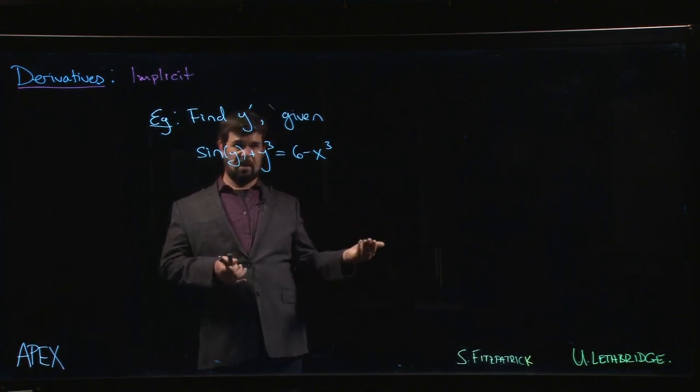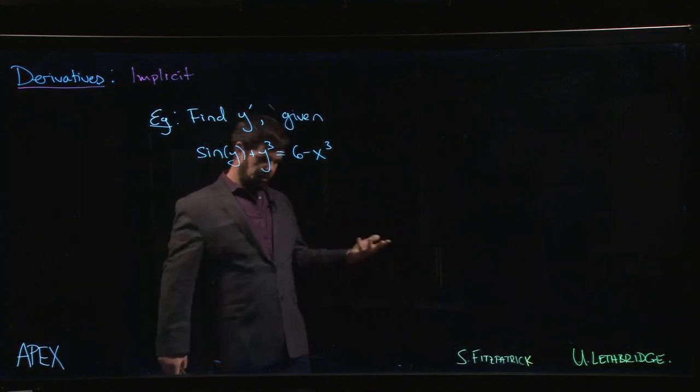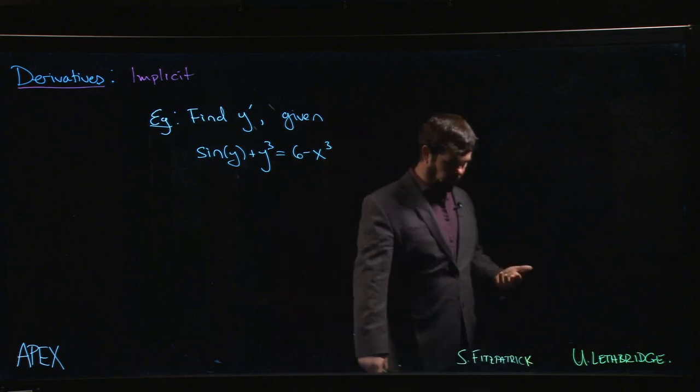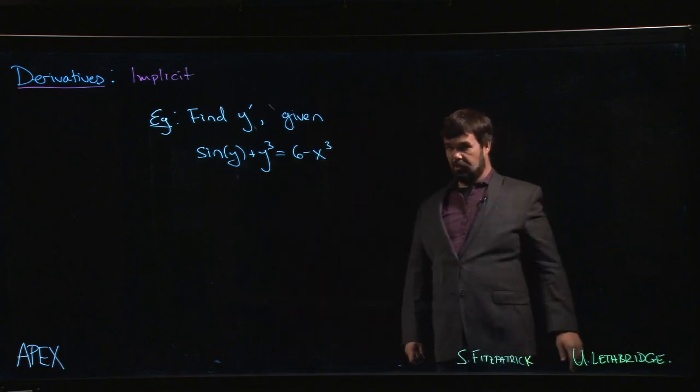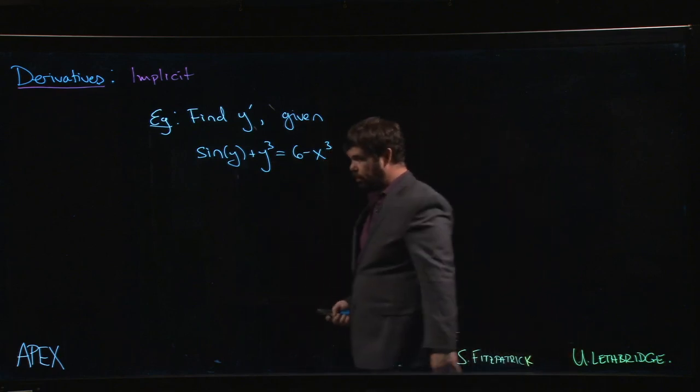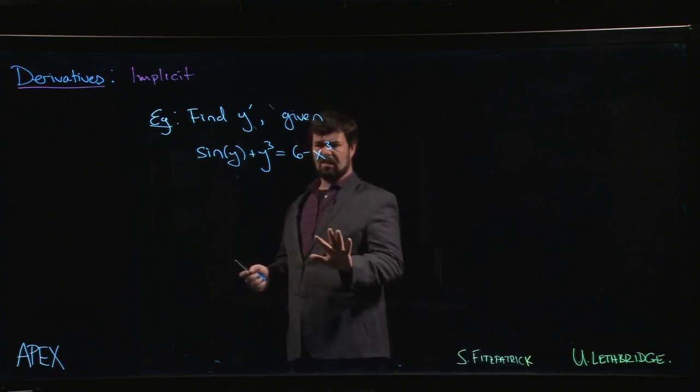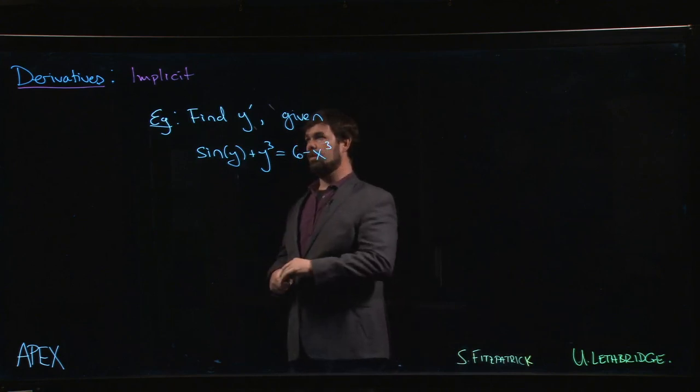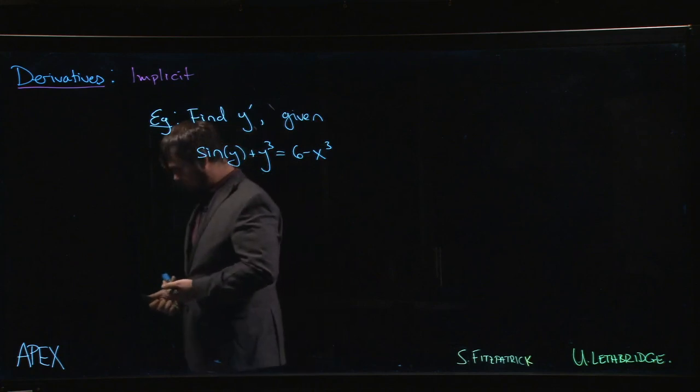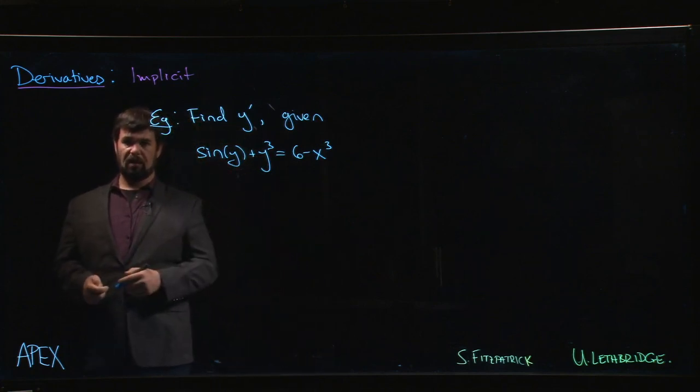That's fine. That would give us dx/dy, and if we wanted dy/dx, take the reciprocal, flip it over, you'd have the answer. But let's try it. The goal here is to learn implicit differentiation, so let's not look for shortcuts. Let's do the problem as it's presented.